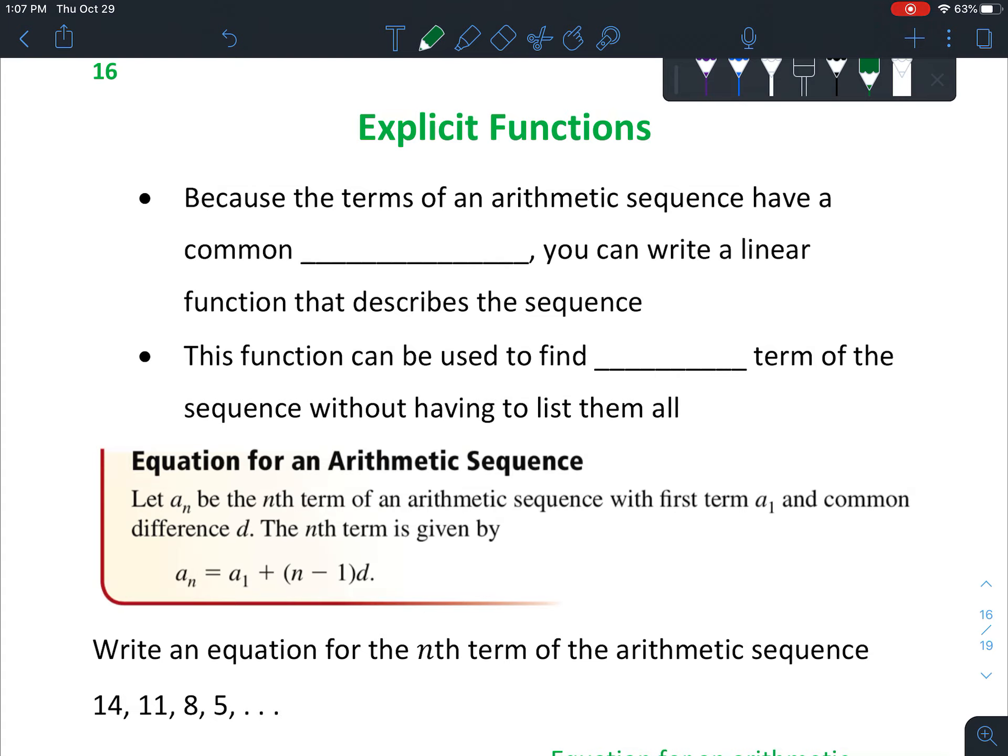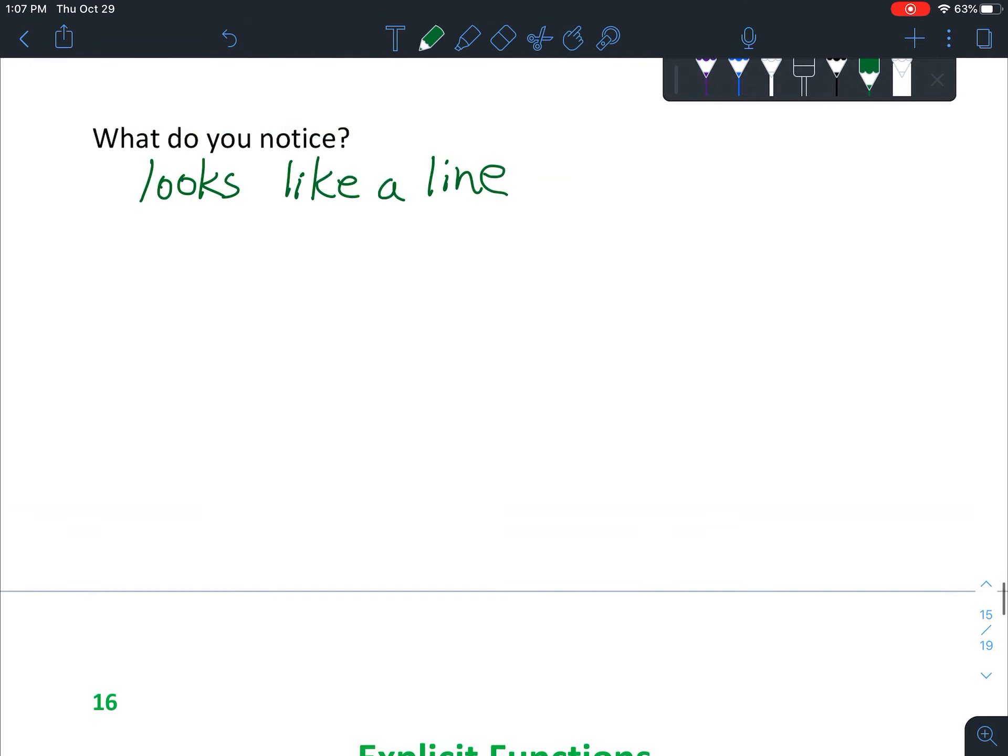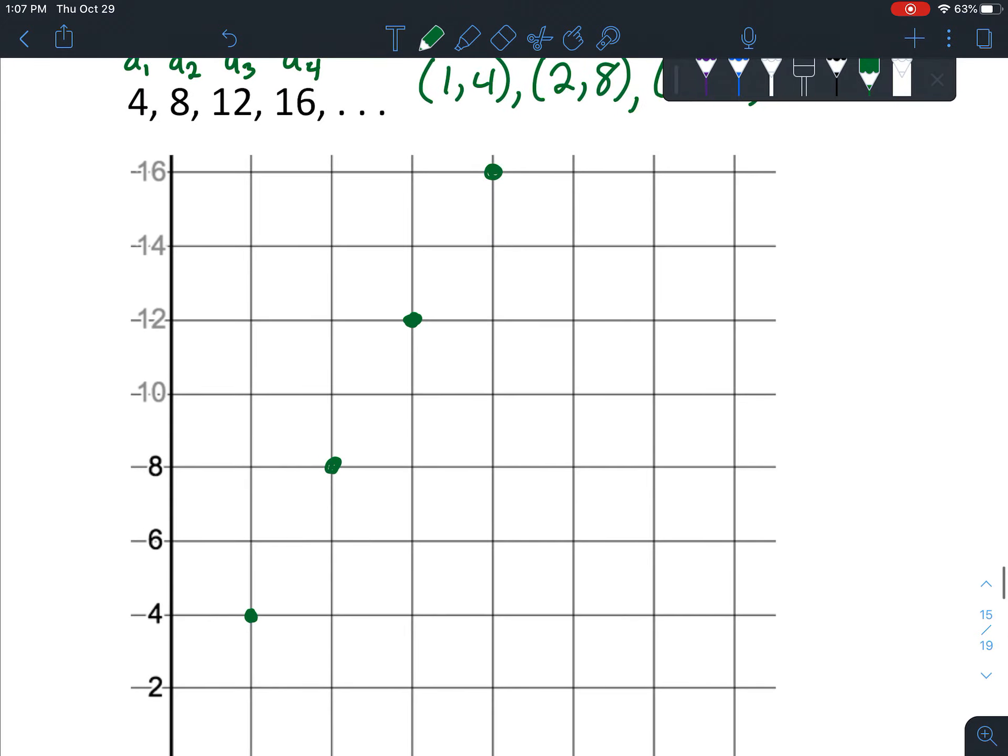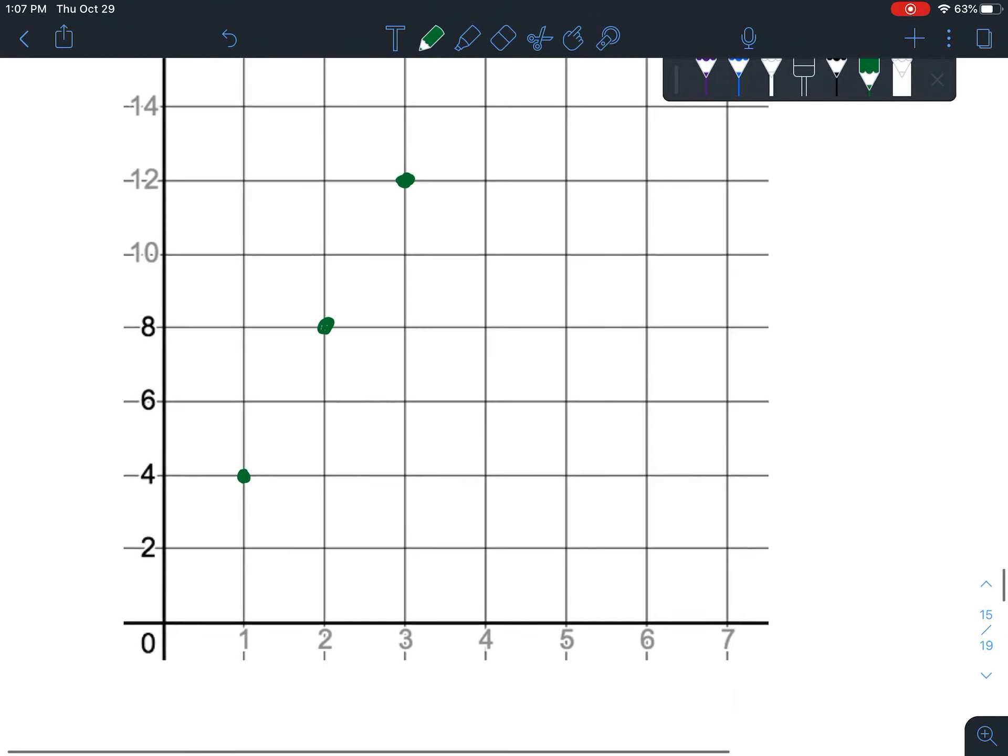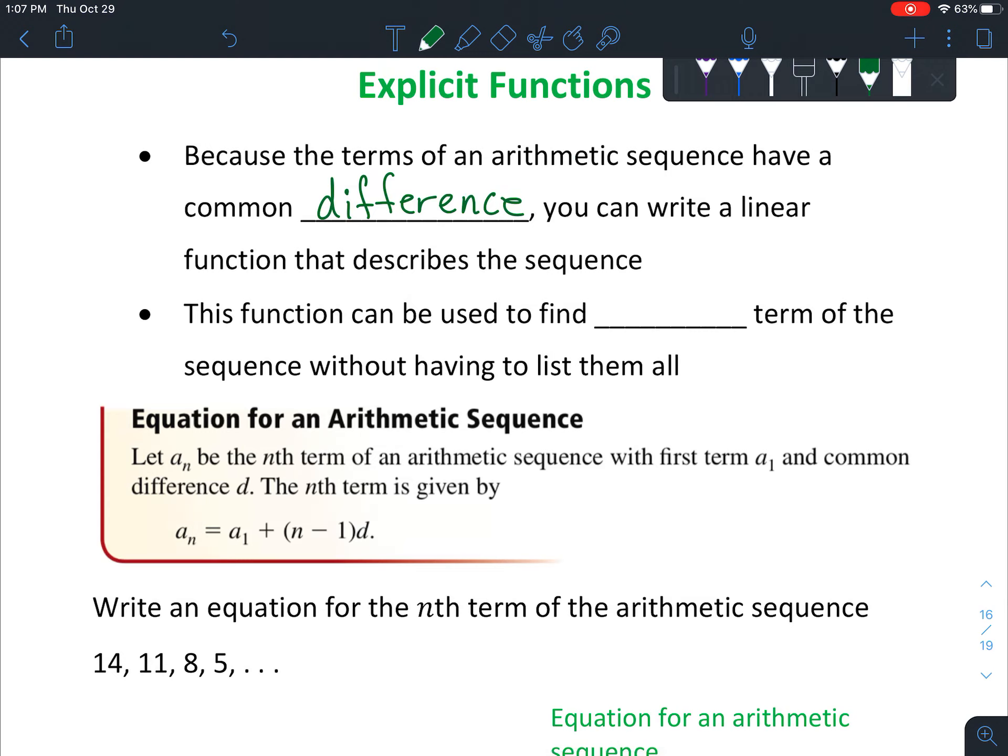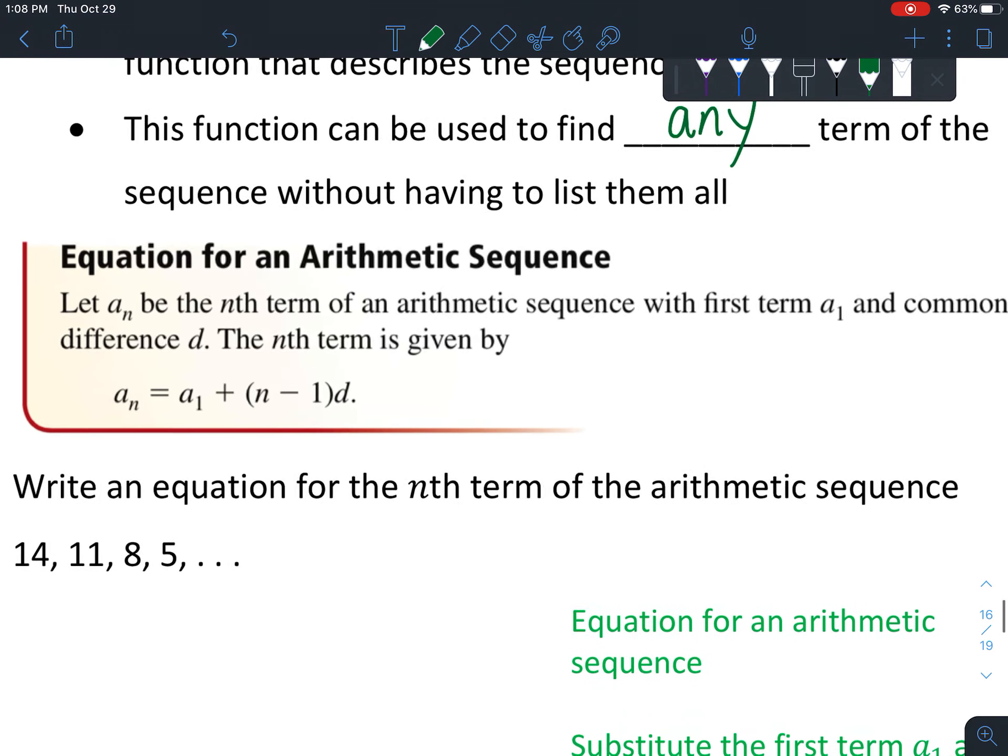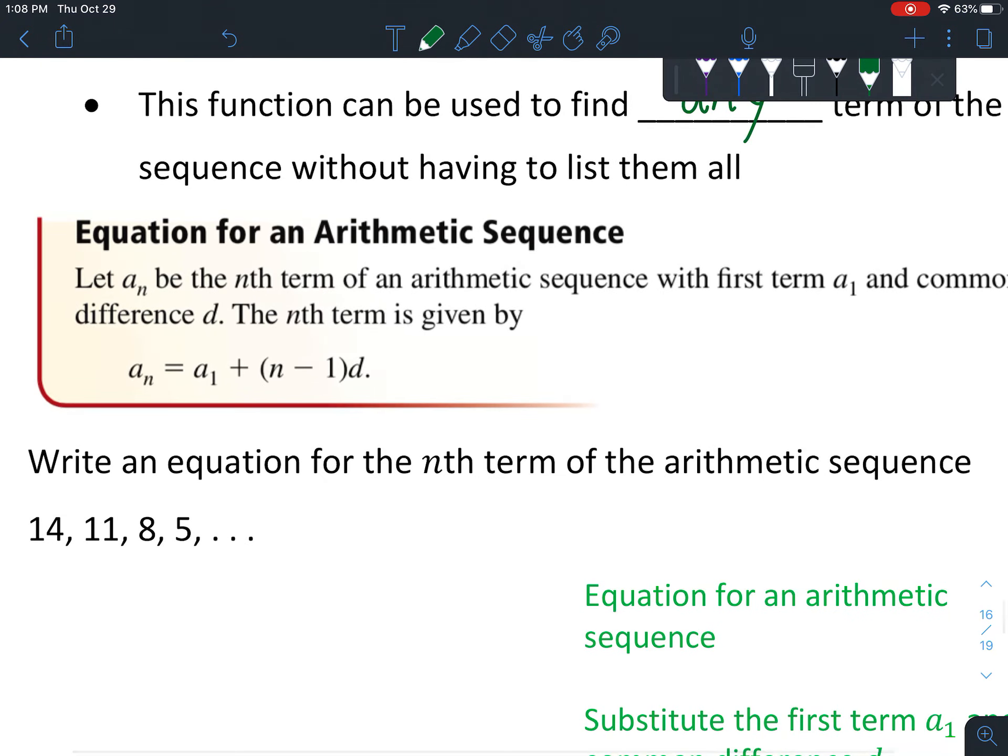So the key to this is because the terms of an arithmetic sequence have a common difference, since you're always subtracting or adding the same amount, you can write a linear function that describes the sequence. Just like yesterday, you probably noticed that this looks like a line, and you can use a linear function to represent those amounts. So this function can be used to find any term of the sequence without having to list them all and add them all together.